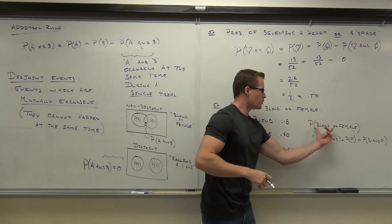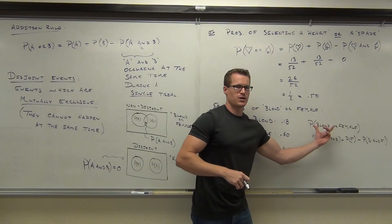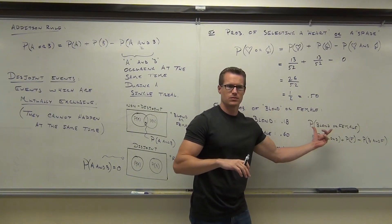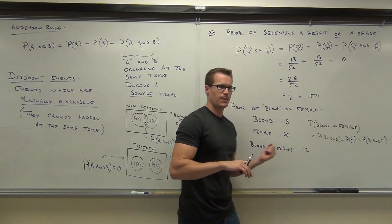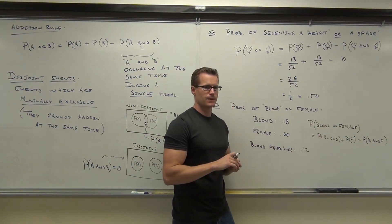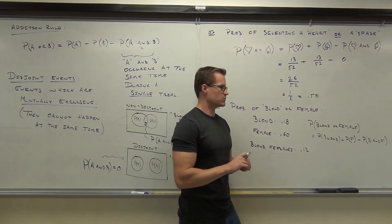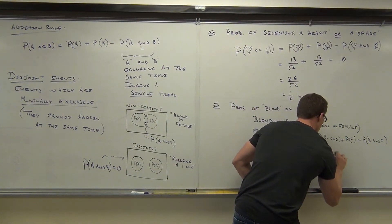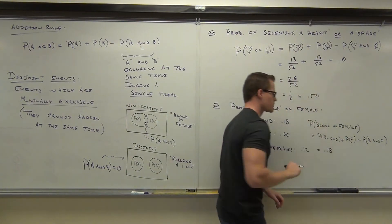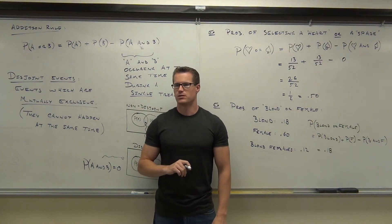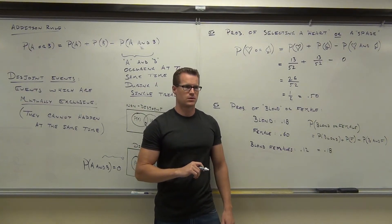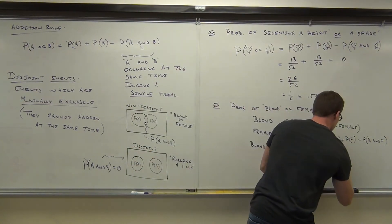Our first event was blonde — what's the probability that you're going to find someone who's blonde in this room? So .18. Somebody else — what's the probability that you're going to select someone who's female from this room? So, .6.